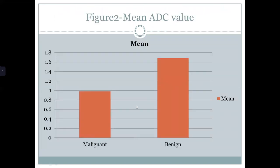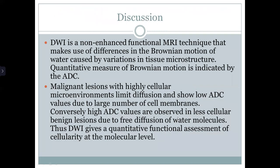This shows the mean ADC of overall malignant and benign lesions. Discussion: DWI is a non-enhanced functional MRI that makes use of differences in the Brownian motion of water caused by variation in the tissue microstructure. Quantitative measure of Brownian motion is indicated by the ADC. Malignant lesions with highly cellular microenvironment limit diffusion and show low ADC values. Conversely, high ADC values are seen in less cellular benign lesions due to free diffusion of water molecules. Thus, DWI gives a quantitative functional assessment of cellularity at the molecular level.